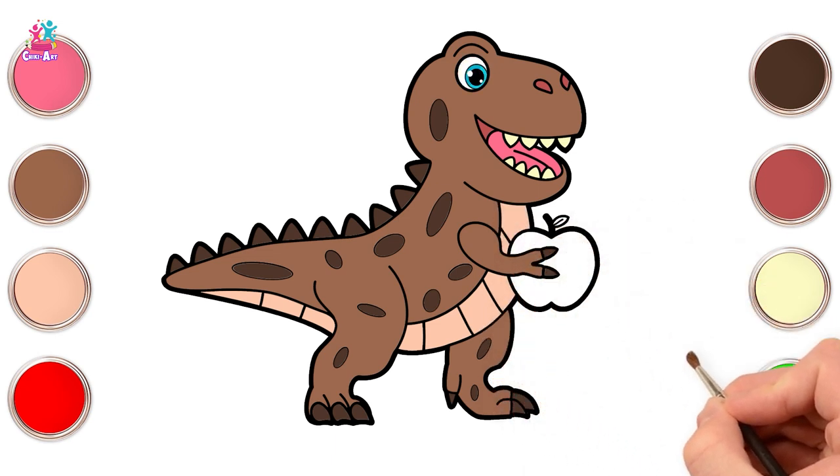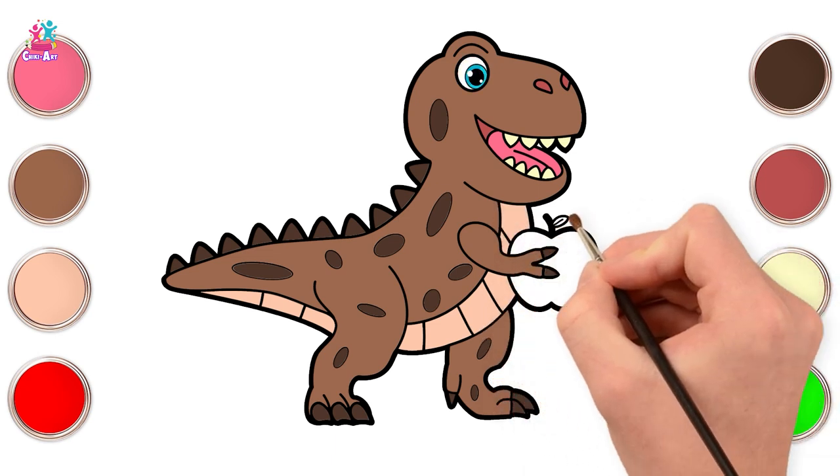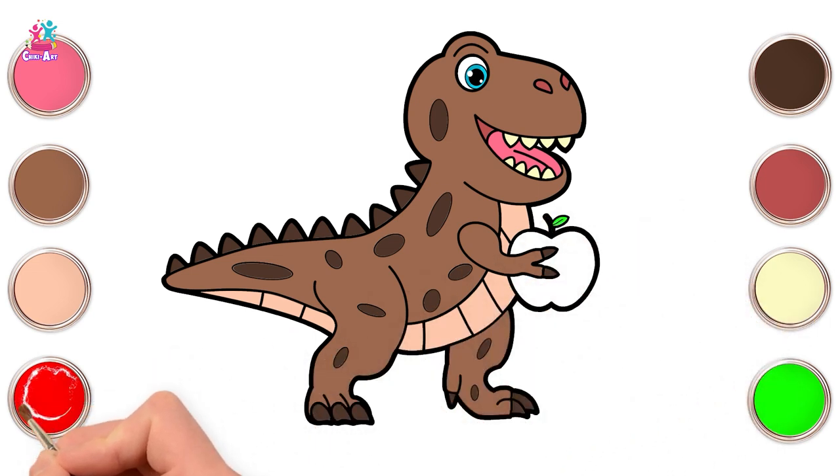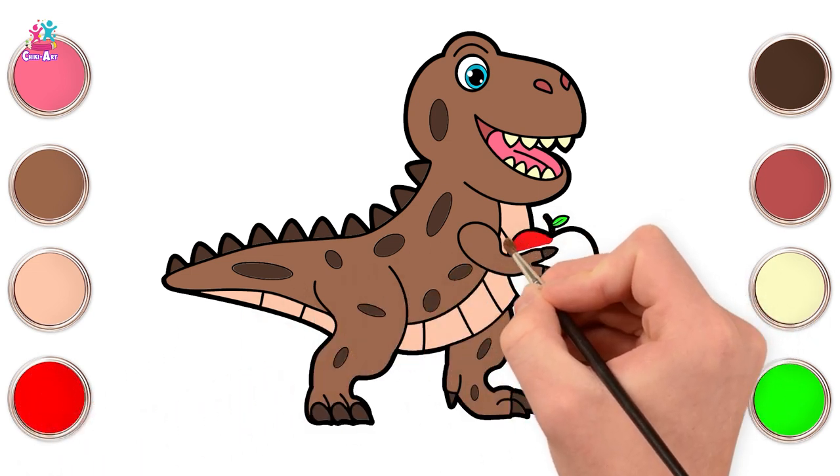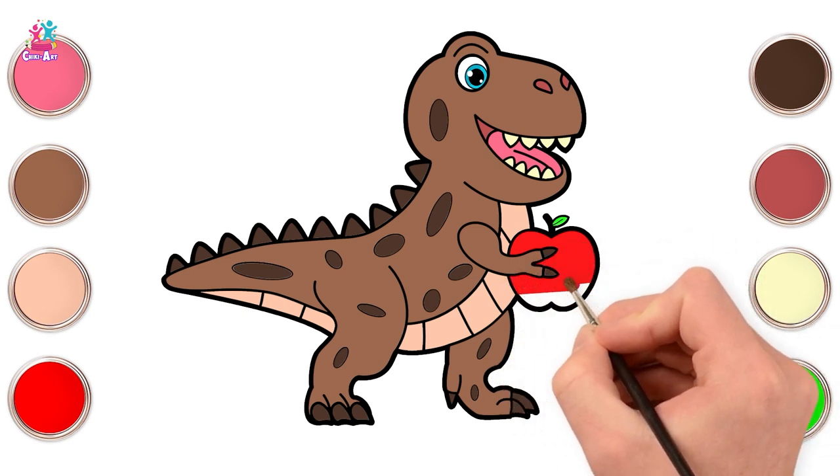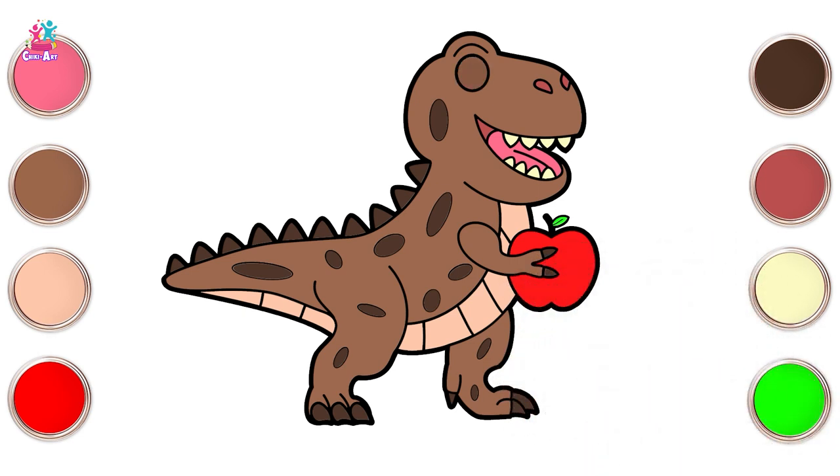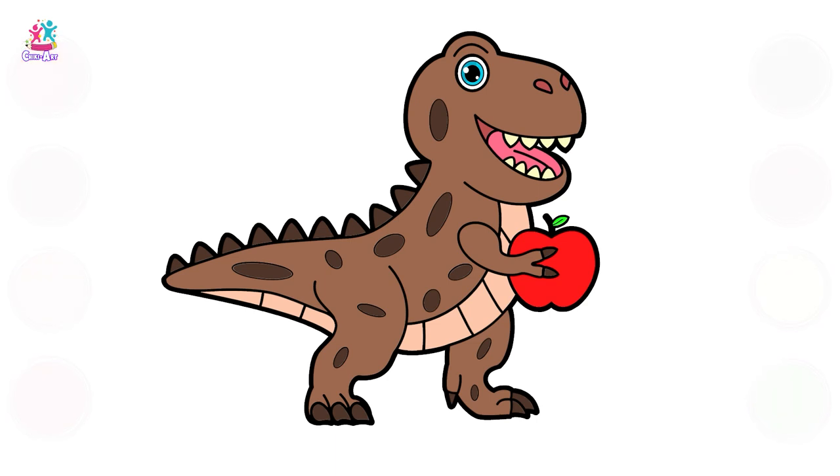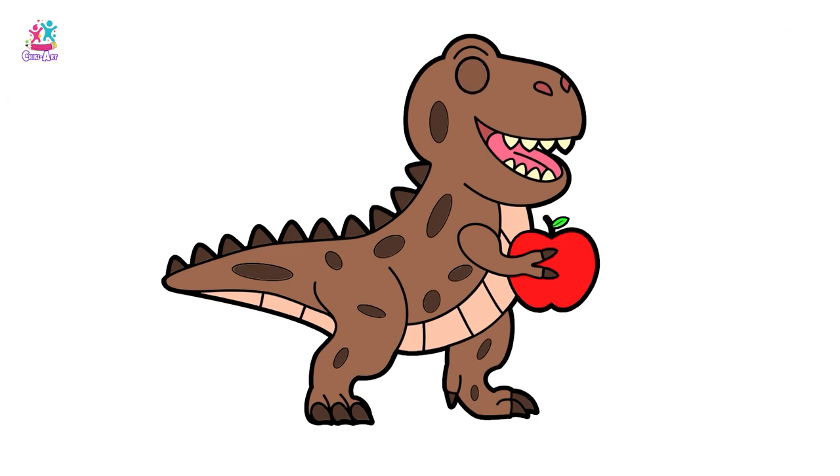Now for the apple. Green for the leaf and red for the apple. Our dinosaur is ready! He looks nice and colorful, doesn't he?